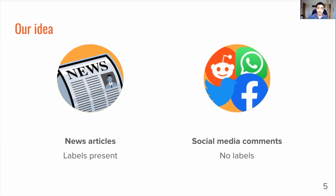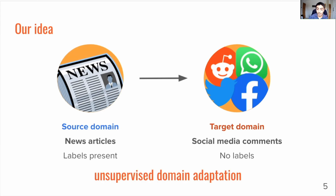This is a type of machine learning called transfer learning, specifically it's called domain adaptation. In this particular case we're treating news as the source domain since it's the domain we're learning data from, and social media comments is the target domain since it's what we're applying our learnt knowledge to. Specifically, when there's no labelled data in the target domain we call this problem unsupervised domain adaptation.